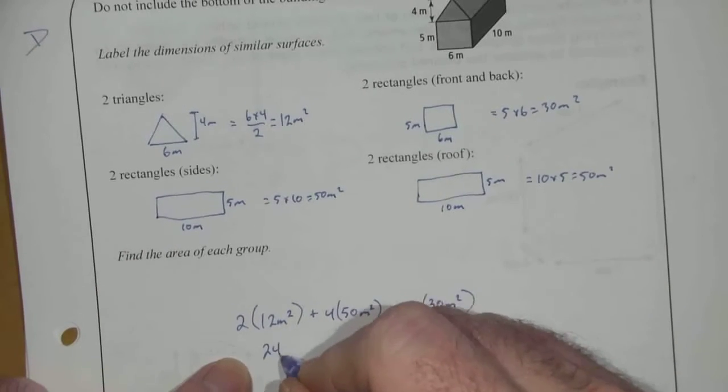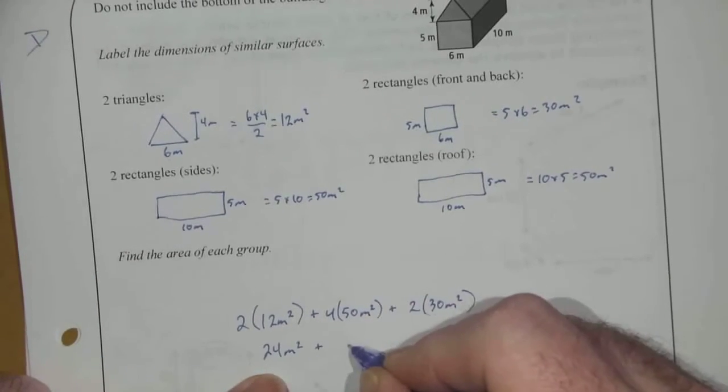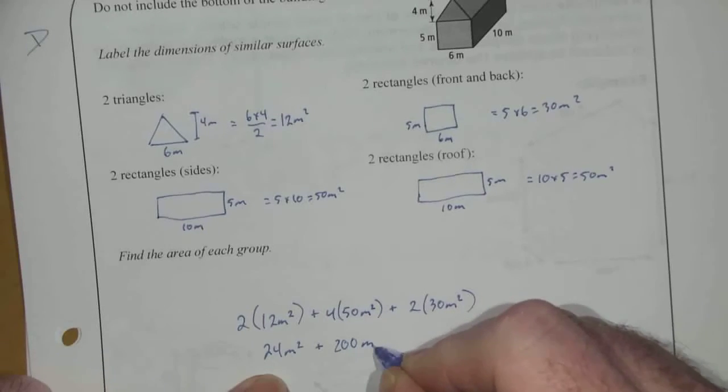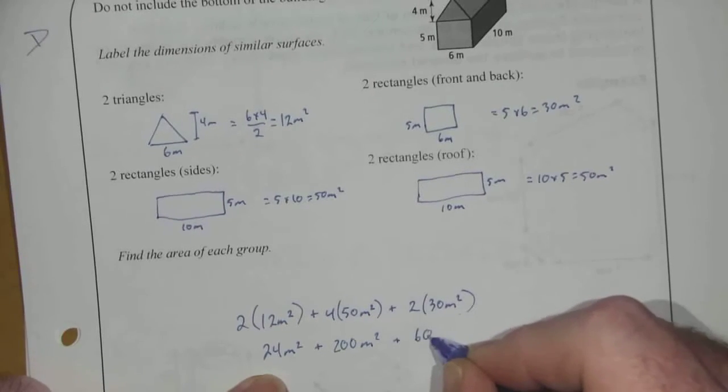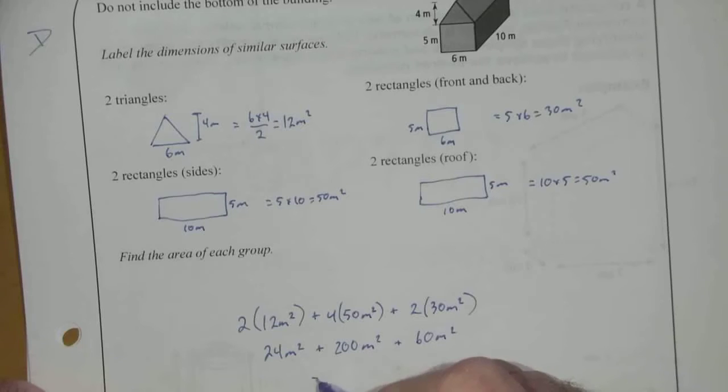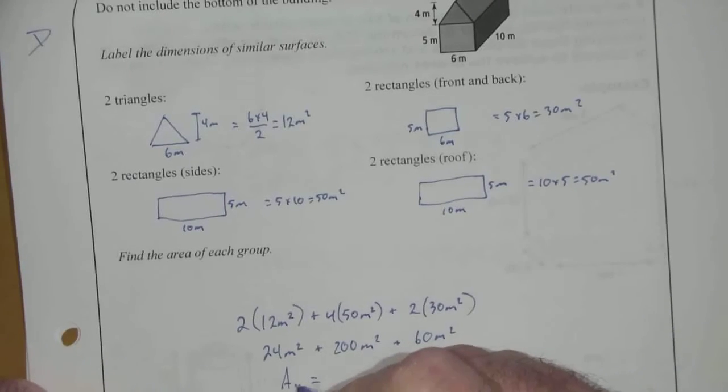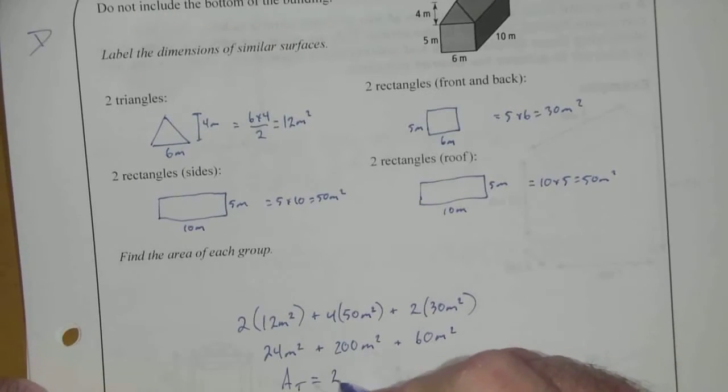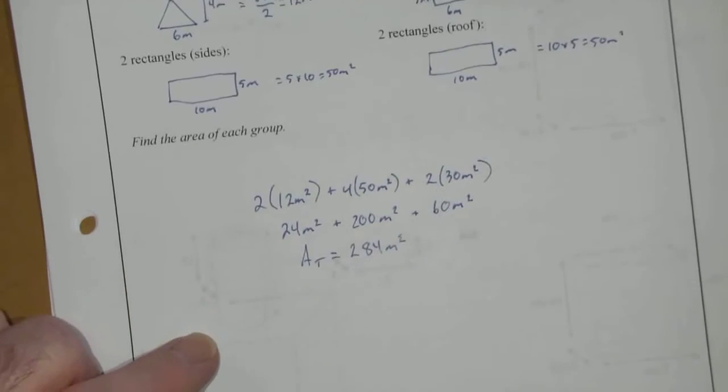So then we're adding 24 meters squared, plus 200 meters squared, plus 60 meters squared. So our total area is equal to 284 meters squared.